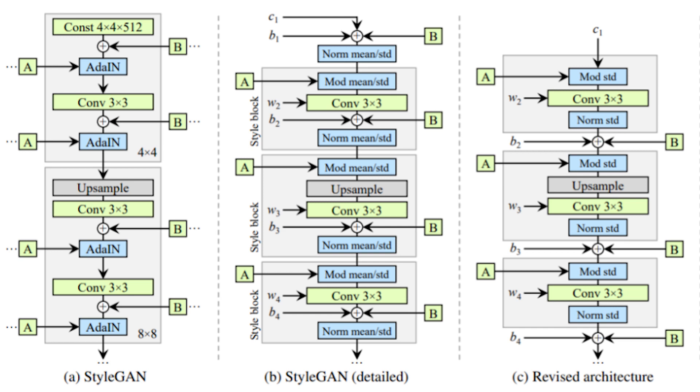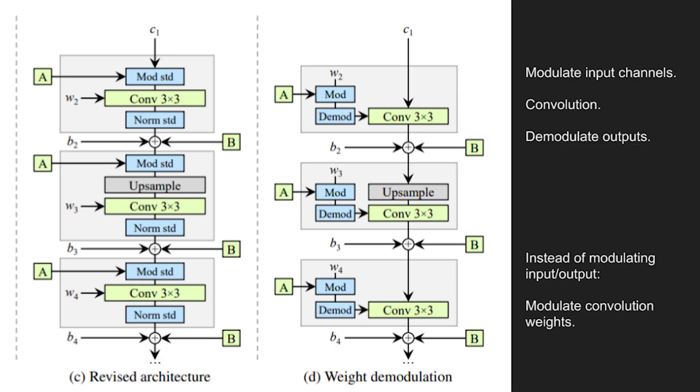What the authors then changed was genius in my opinion. They realized they could get the exact same effect by modulating and demodulating the convolution kernel weights without doing all the calculations of modulating and demodulating the input and output feature maps respectively.